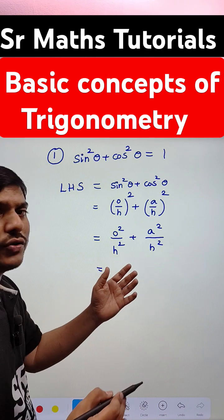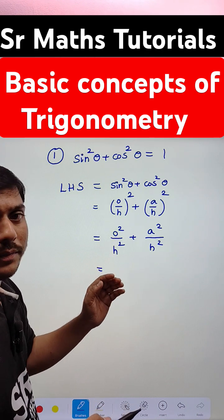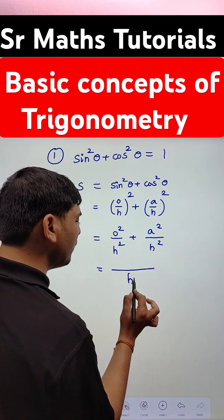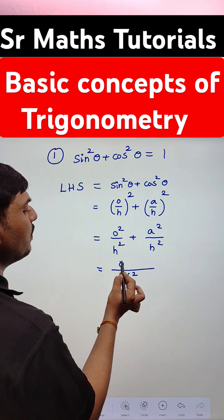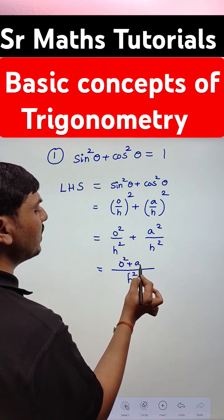These two ratios, these two concepts are like fractions. So I represented only one time h square in the denominator. The numerators are opposite square and adjacent square.